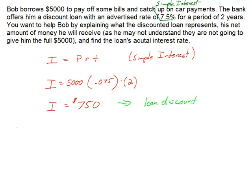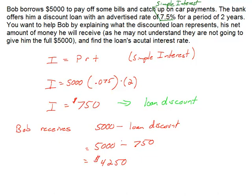So what's going to happen is that $5,000 is going to be discounted by $750, and so Bob receives the $5,000 minus the loan discount. In this case, $5,000 minus $750 says that he's going to get $4,250 from the bank at the start of this two-year period agreement. So the bank will give him $4,250, and the loan says that in two years time you're going to have to pay us back a total of $5,000.